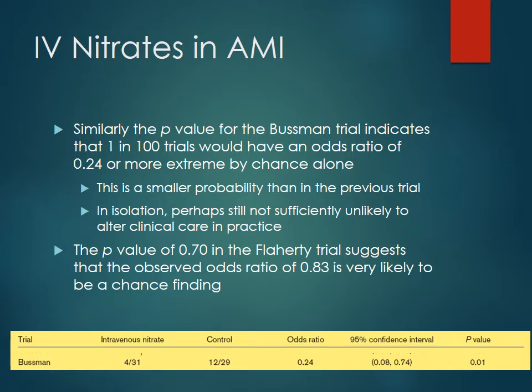Looking at just one trial that shows a clinically significant result is all well and good, but usually it's not going to be enough to actually change clinical practice, especially when you look at the actual number of patients being treated. In the control group they had 29 patients and 31 in the experimental group. Typically you're going to need a lot bigger numbers to really say whether or not the treatment is going to have a true effect. It's hard to generalize around 60 patients to all patients having myocardial infarction, and you also don't know much about the inclusion criteria, so the generalizability of a single study like this is pretty limited.